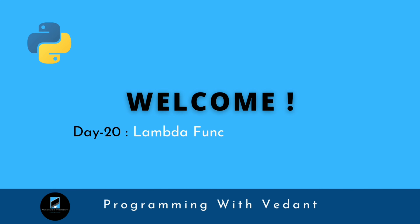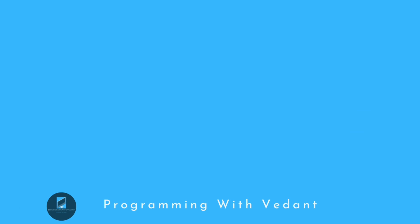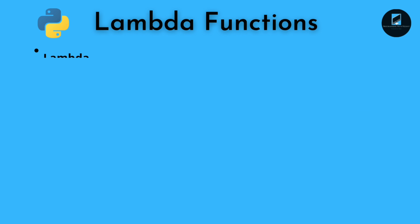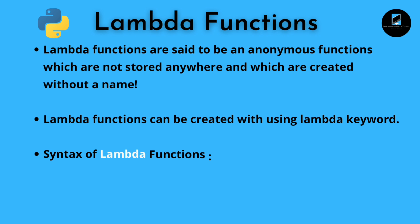Hey guys, welcome back to my YouTube channel. Today is day 20 and we are going to learn about lambda functions, map function, and filter function. Lambda functions are said to be anonymous functions which are not stored anywhere and which are created without a name. Lambda functions can be created using the lambda keyword.